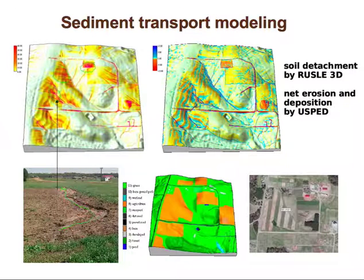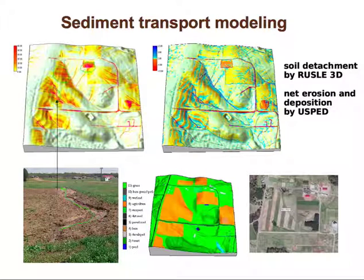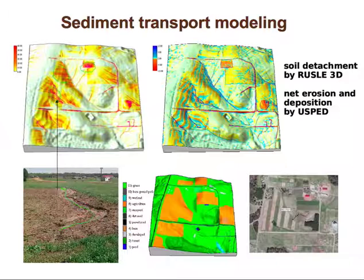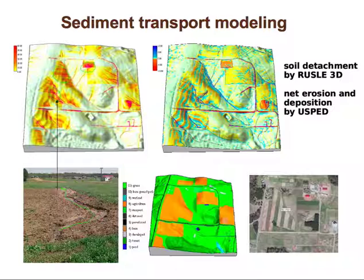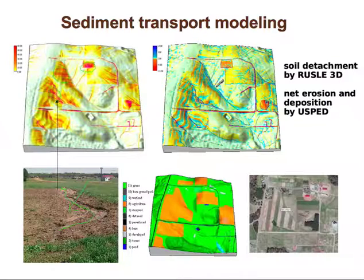We can also run a net erosion and deposition model. This part shows where the soil is detached, and this result shows where we have net soil loss and net soil gain. You can see there is some impact of how this field is managed on the topography. There are very subtle convex and concave areas that lead to erosion and deposition, but there is still a significant potential for erosion here, particularly in the center area of water flow convergence.